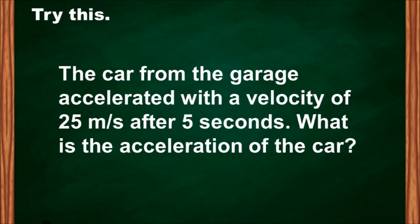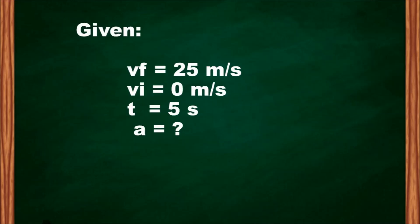Another problem: a car from the garage accelerated to a velocity of 25 meters per second after 5 seconds. What is the acceleration of the car? Analyze the problem carefully and identify the initial and final velocity. The final velocity is 25 meters per second, and the initial velocity is 0 meters per second since the car came from the garage and was not in motion. Time is 5 seconds.